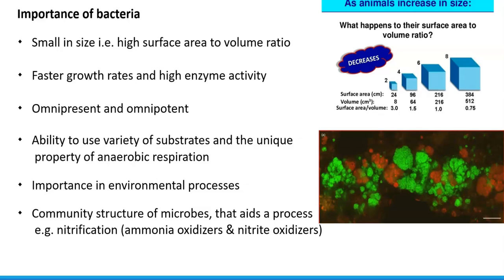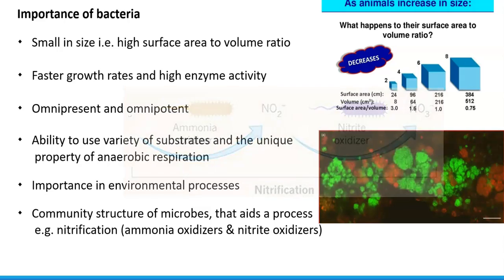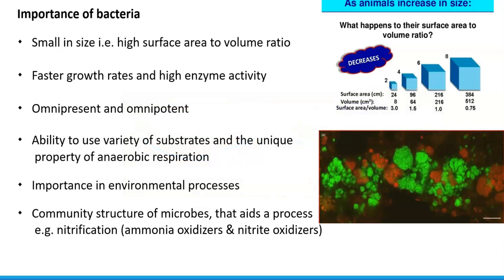The next point relates to the role of bacteria. They play an immense role in environmental processes, especially in organic matter degradation and nutrient cycling. Communities of microbes aid in different kinds of processes. For example, nitrification is a process mediated by two different groups of organisms present together as a community — ammonia oxidizers and nitrite oxidizers, shown in green and red colors respectively — which together perform the nitrification process and serve as a community in the soil system.